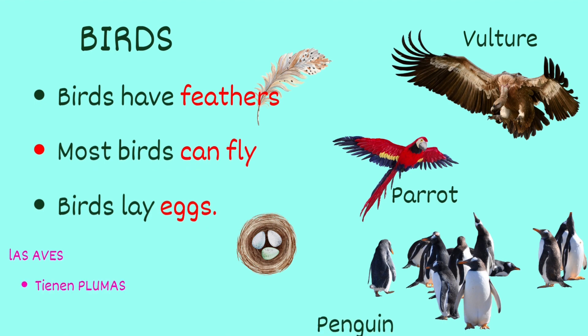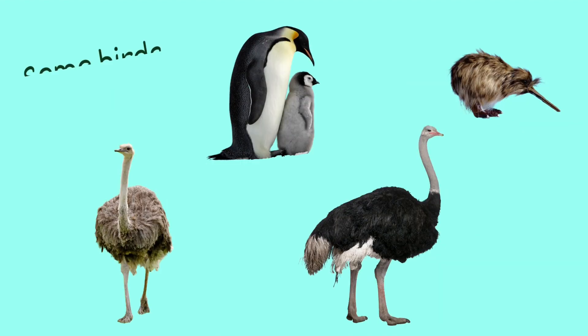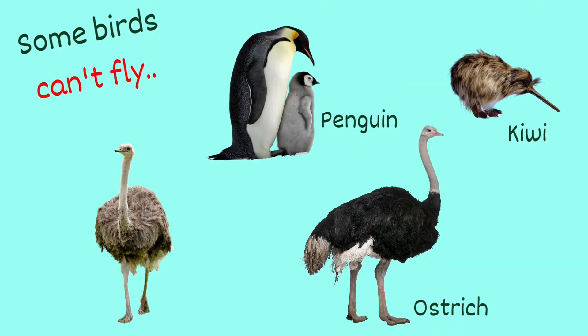These are birds. Birds are also vertebrates. Birds have feathers, most birds can fly, and birds lay eggs. But remember, some birds like penguins, kiwis, emus or ostriches cannot fly.